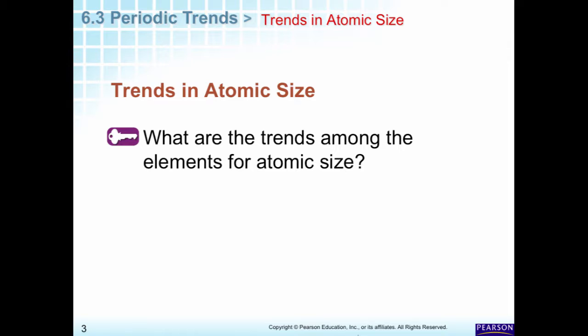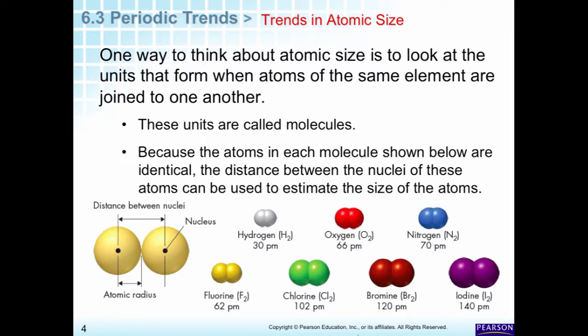The first thing we're going to talk about is atomic size — how does atomic size change as we go through the periodic table? The way we measure atomic size is usually by measuring the distance between two nuclei, because it's very hard to determine where the end of the electron cloud is located. It's basically going to be the diameter, so half of that will be the radius, and that's how we determine the radius of an atom.